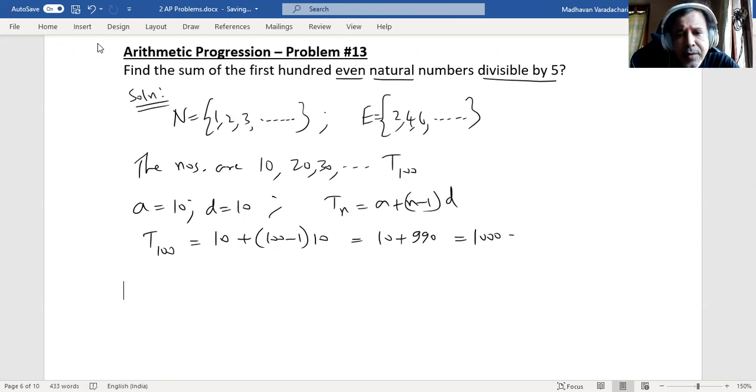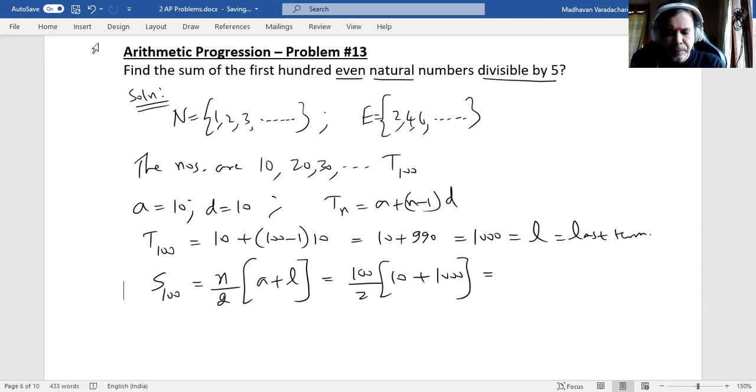Now we calculate the sum SN. The last term L is 1000. The sum formula is SN = N/2 × (A + L). So S100 = 100/2 × (10 + 1000) = 50 × 1010 = 50,500. That is the sum of the first 100 even natural numbers divisible by 5.